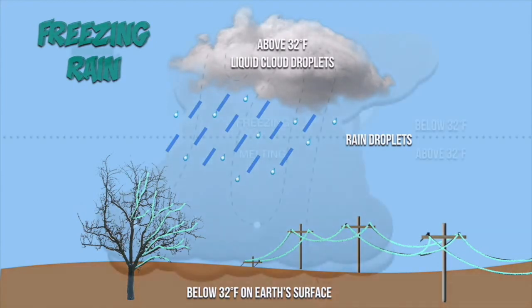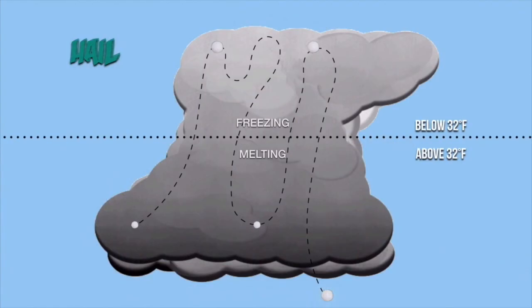The final type of precipitation is hail. Hail is associated with a type of cloud called a cumulonimbus cloud. A cumulonimbus cloud is a towering cloud — sometimes called an anvil cloud — that's very narrow in the center but wide at the base and the very top.